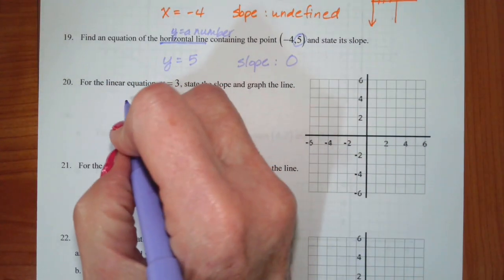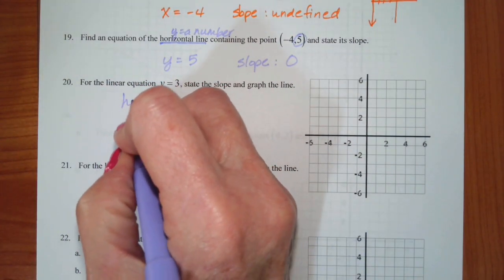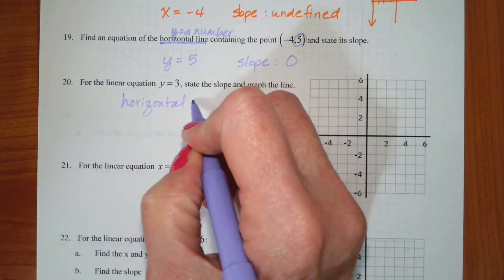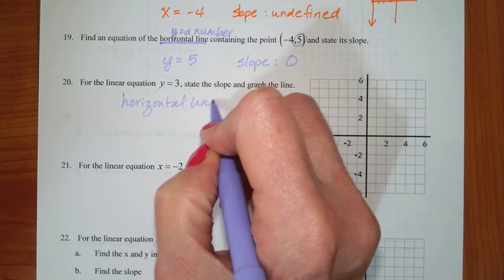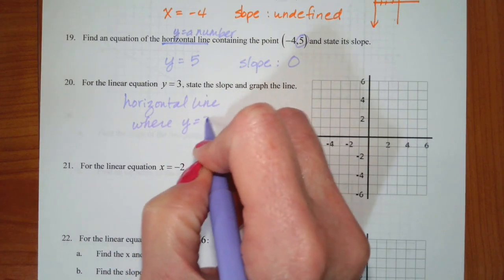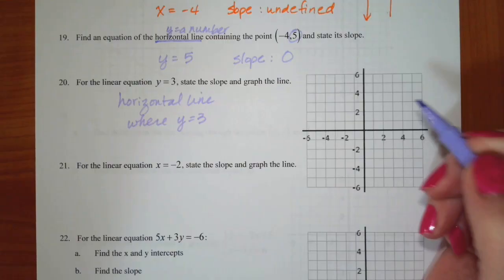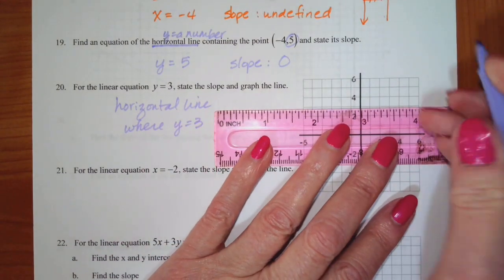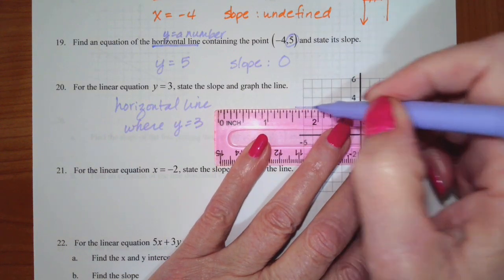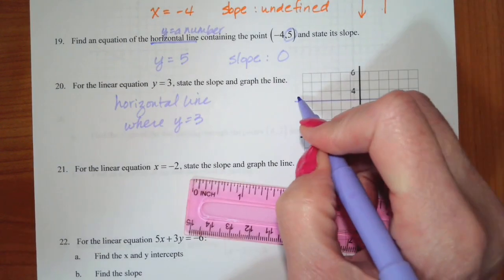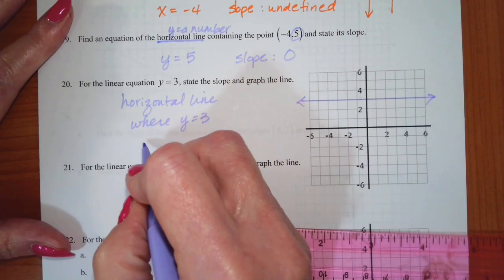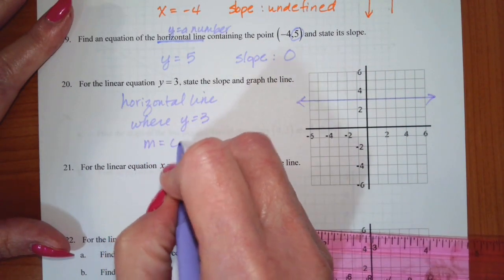y equals 3 — we know that is a horizontal line where y equals 3. There's the line, and the slope is 0.